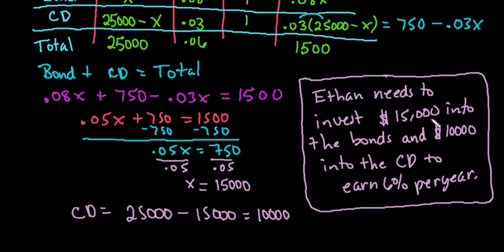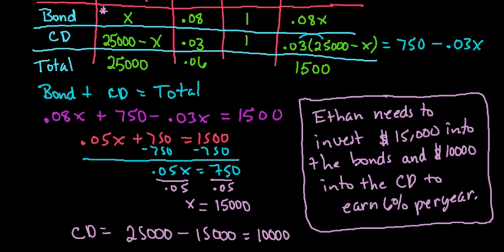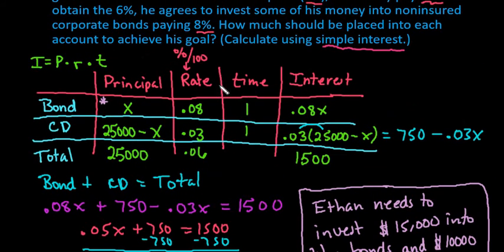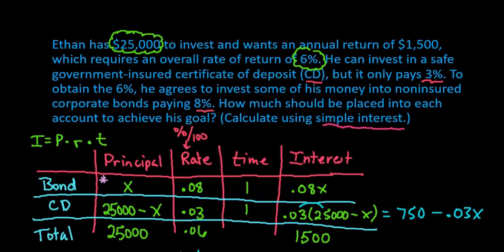So this is how we would set it up. Ethan needs to invest $15,000 into the bonds and $10,000 into the CD to earn this desired 6% per year. If he needed more, like he wanted to earn more, he would have to put more into the higher yielding account. If he wanted less, then he would put it into the lower yielding account. As always, thanks for watching. If you have any questions, please let me know.